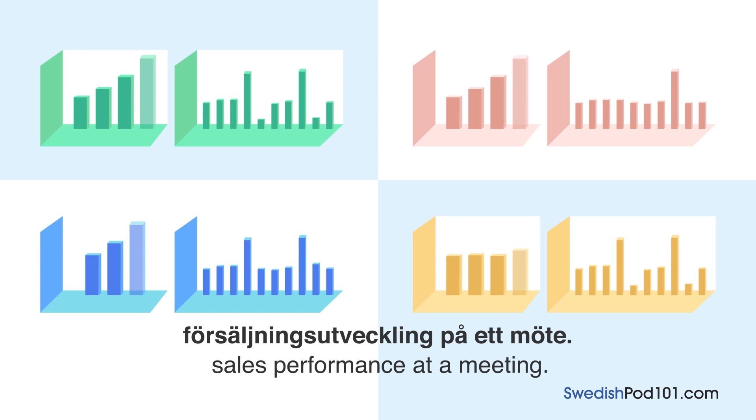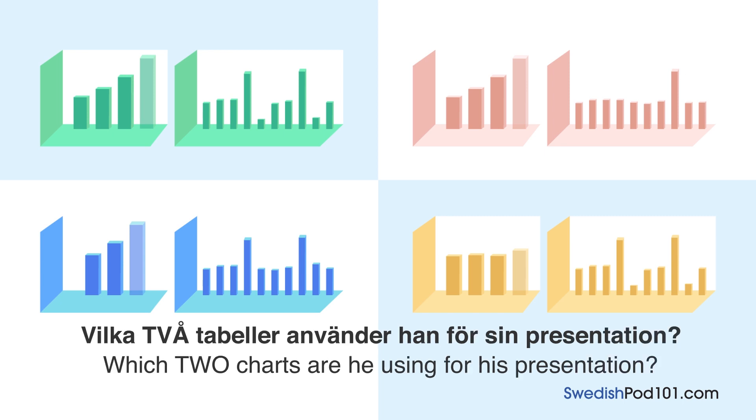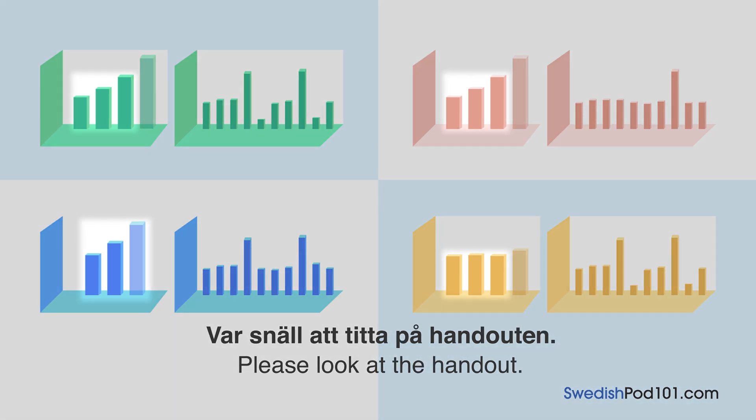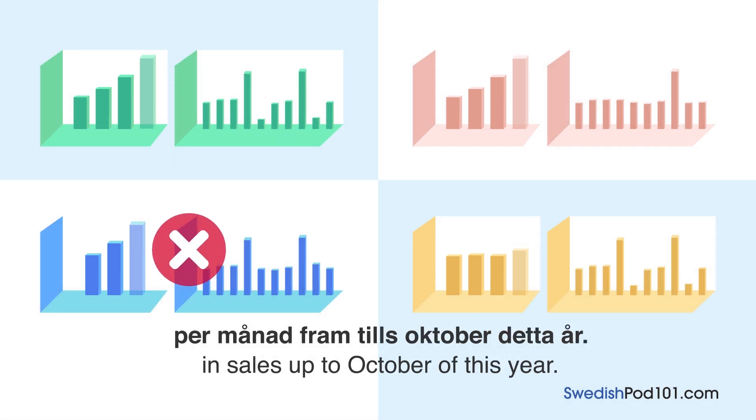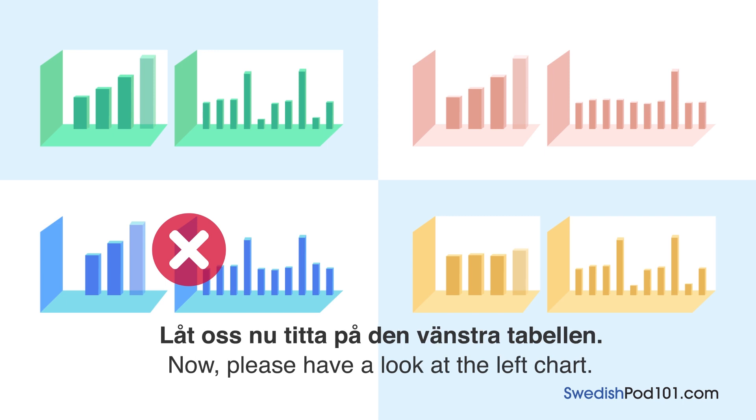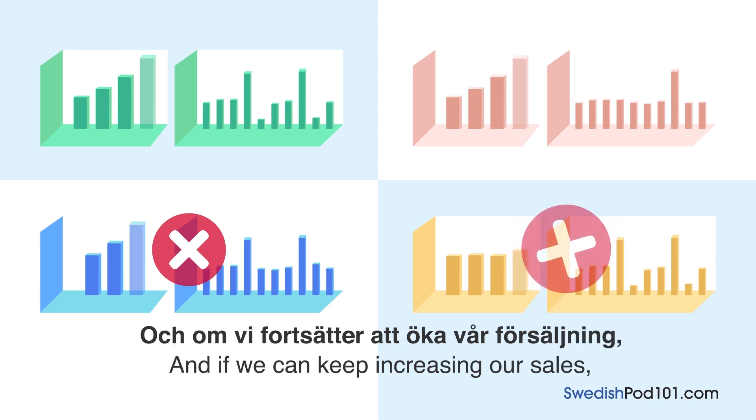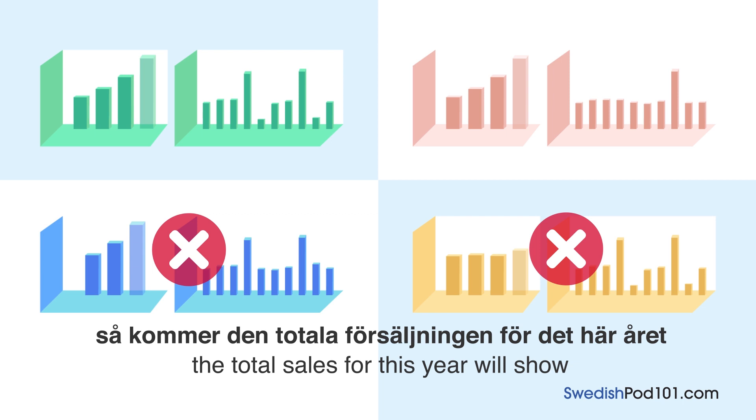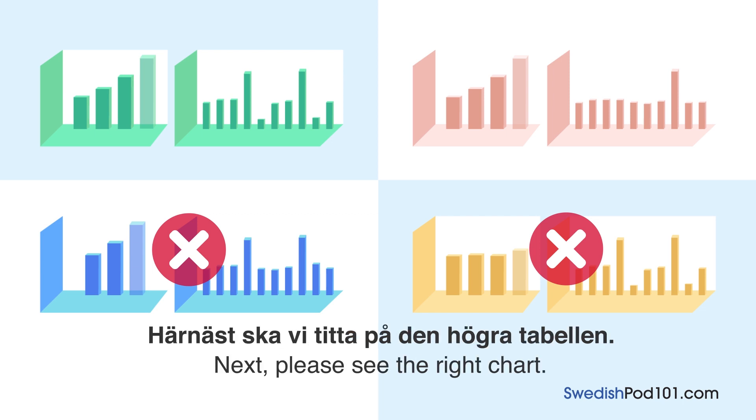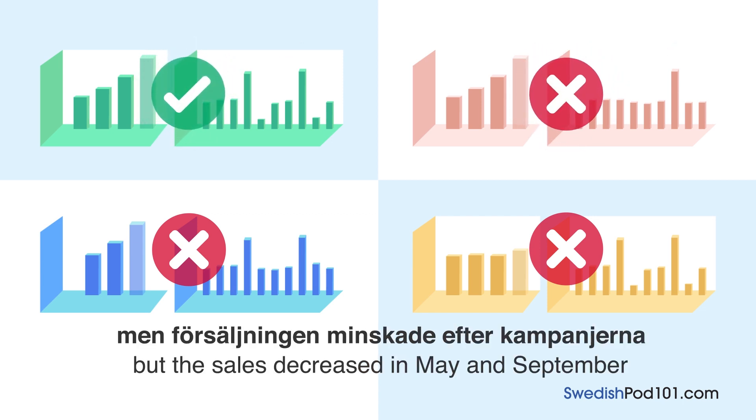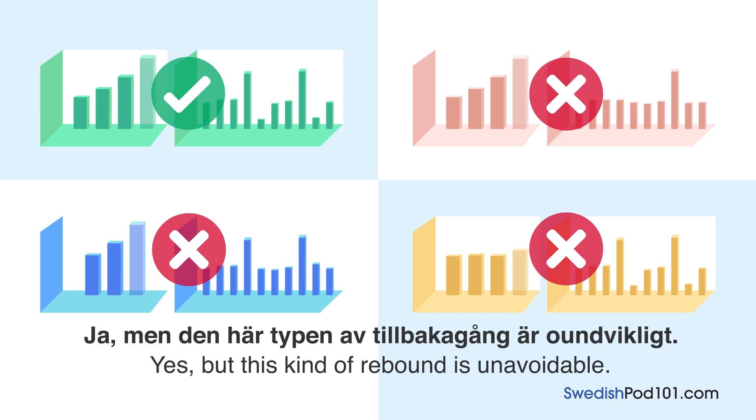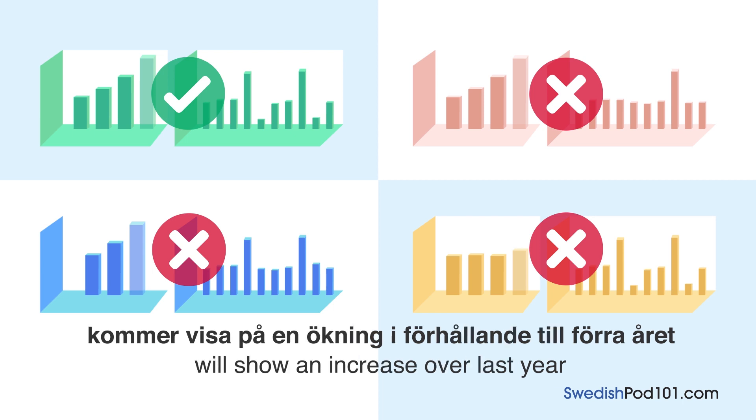En man redovisar för sitt företags försäljningsutveckling på ett möte. Vilka två tabeller använder han för sin presentation? Var snäll att titta på handouten. Den vänstra tabellen visar vårt företags försäljning under de senaste tre åren och försäljningsprognosen för detta år. Den högra tabellen visar försäljningen per månad fram tills oktober detta år. Låt oss nu titta på den vänstra tabellen. Den visar att försäljningen stadigt har ökat under de senaste tre åren. Och om vi fortsätter att öka vår försäljning så kommer den totala försäljningen för det här året vara en ökning i förhållande till förra året. Härnäst ska vi titta på den högra tabellen. Den högra tabellen visar att kampanjerna som visade i april och augusti var rätt effektiva. Jag förstår. Men försäljningen minskade efter kampanjerna i maj och september. Ja, men den här typen av tillbakagång är undvikligt. Jag förväntar mig att den årliga försäljningen för detta år kommer visa på en ökning i förhållande till förra året om vi fortsätter att öka vår försäljning. Did you get it right? I hope you learned something from this quiz. Let us know if you have any questions. See you next time!